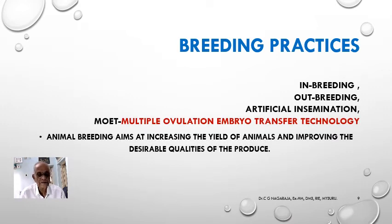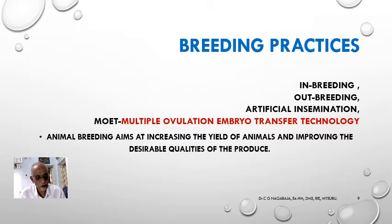There are four different types of breeding. One is called inbreeding. Second is called outbreeding. Third refers to artificial insemination by veterinary doctors. The fourth type involves producing good breeds by means of multiple ovulation embryo transfer technology (MOET). All types of animal breeding aim at increasing the yield of animal products and improving the desirable qualities of the produce in both the progeny and the products.